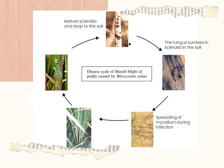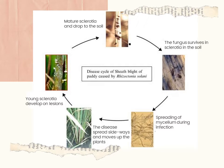Initial infections start with a sclerotium or a piece of infected debris floating on the water surface and coming in contact with the rice plant. The fungus is attracted to chemical stimuli released by the rice host. Germinating sclerotia or mycelia in debris penetrate plant tissues either through natural openings or by specialized infection structures called appressoria or infection cushions.